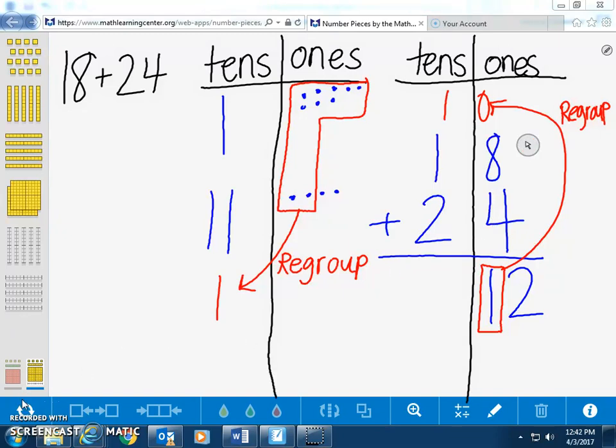Again, now we have 4 10s and 2 1s. We can now count up all of our 10s and 1s after regrouping to get our answer. 10, 20, 30, 40, 41, 42.